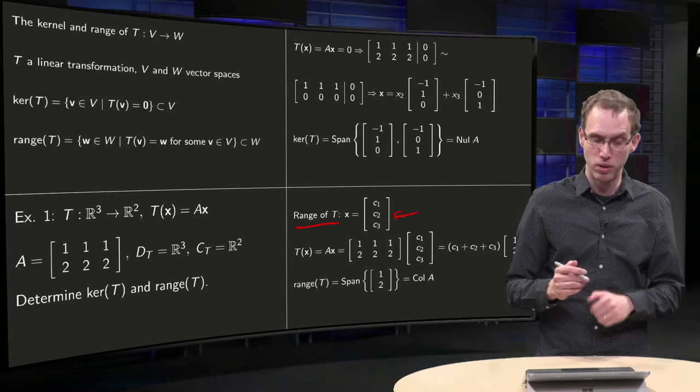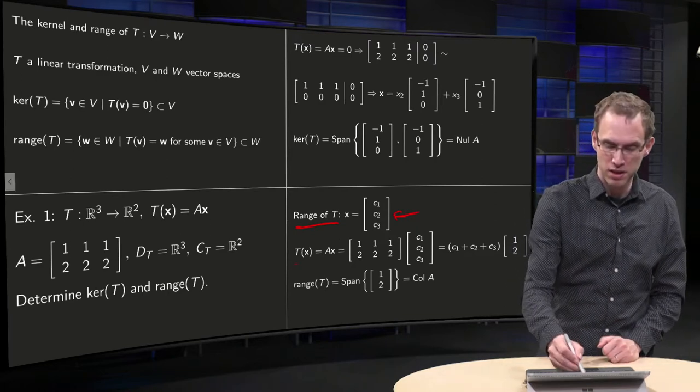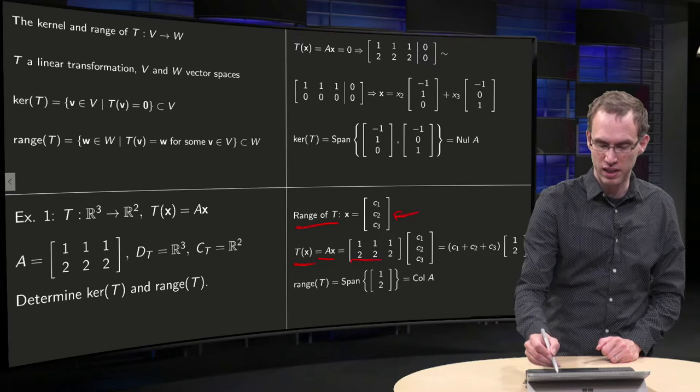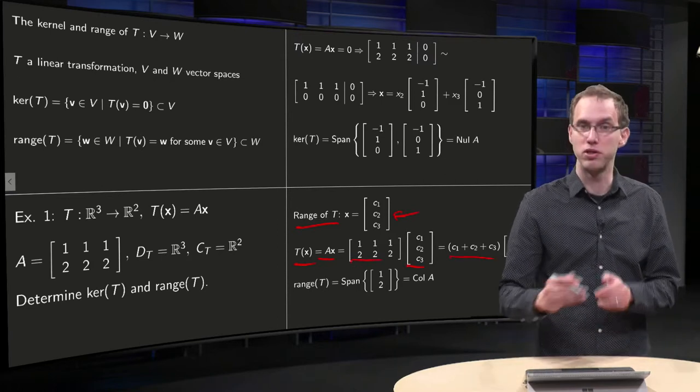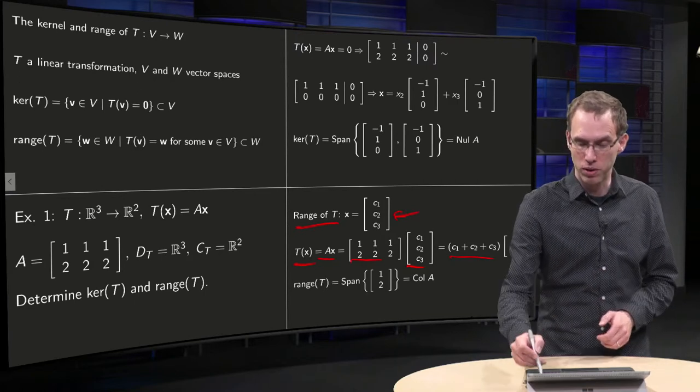So we take an arbitrary vector in the domain. Then T(X) equals A times X equals A times this arbitrary vector, and in this case that will be C₁ plus C₂ plus C₃ times (1, 2).